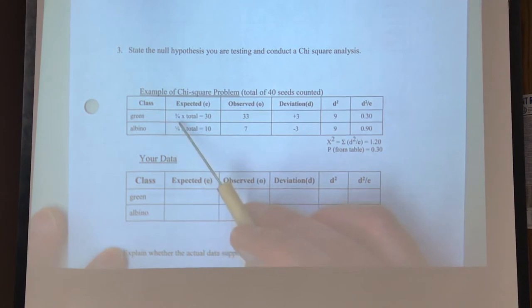All right, so what you do is you take three-quarters times the total, which is 40, and you would get 30. You take a quarter times the total to get 10.